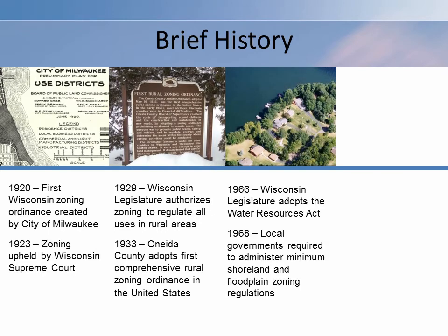Wisconsin is also considered an early leader in the development of zoning regulations to protect water resources. In 1935, the legislature amended county zoning powers to allow for the regulation of land uses along natural water courses. In 1966, the state legislature adopted the Water Resources Act to address significant increases in shoreline development. The Act gave local governments responsibility to adopt, administer, and enforce minimum shoreline and floodplain zoning regulations. By 1971, all Wisconsin counties had adopted shoreline zoning ordinances.